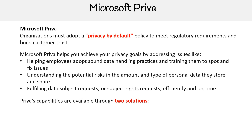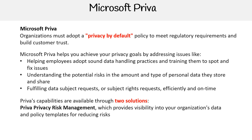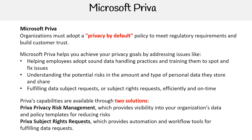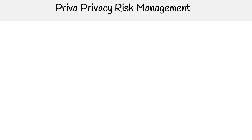Priva's capabilities are available through two solutions. First, we have Priva Privacy Risk Management, which provides visibility into your organization's data and policy templates for reducing risks. And there's Priva Subject Rights Requests, which provides automation and workflow tools for fulfilling data requests.